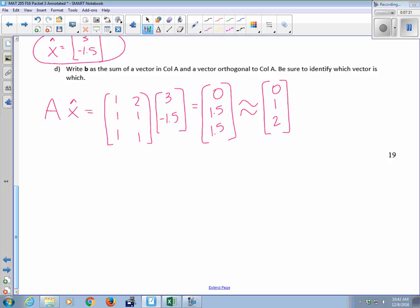And then this 0, 1.5, 1.5, this is B hat, right? The thing that we've been finding in the past few classes, the point that's closest to B within a given space, in this case the column space of A, we tend to call it B hat. And we could also write it as the projection of the vector B onto the column space of A.